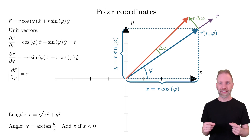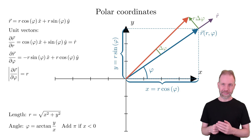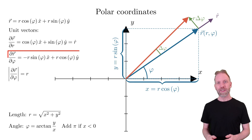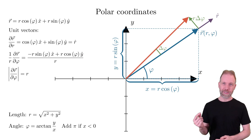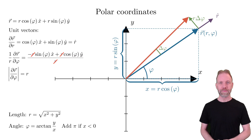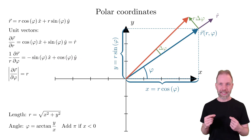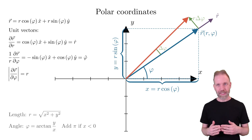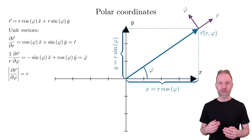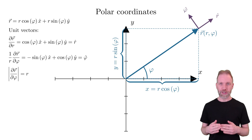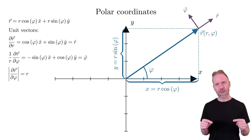This length r matches the length of the green vector, given by r delta phi. To get a unit vector, divide the partial derivative by its length — the r cancels. We now have our second unit vector phi-hat, which indicates the direction we move when changing phi. Note that r-hat and phi-hat are orthogonal, which is why we call polar coordinates an orthogonal coordinate system. Note that only a few possible coordinate systems are orthogonal; in this video series we will focus on those that are.